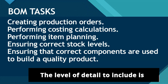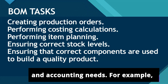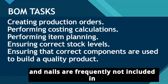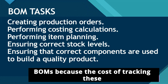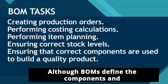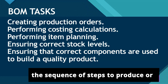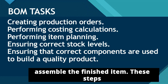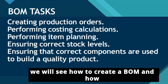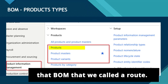The level of detail to include is determined by the company's production and accounting needs. For example, items such as nuts, bolts, screws, and nails are frequently not included in BOMs because the cost of tracking these items is higher than their actual value. Although BOMs define the components and their relationships, they don't define the sequence of steps to produce or assemble the finished item. These steps are defined on the route. In this video we will see how to create a BOM and how to configure the steps to produce that BOM, which we call the route.